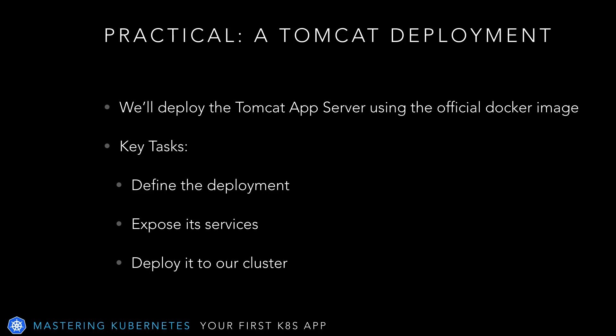In this example, we'll deploy the Tomcat app server using the official Docker image. Our key tasks will be like any deployment you might plan, no matter how small or large. First, we'll define the deployment: what containers we use, what services those containers might offer, and where they come from. Then, we'll expose the services to the world — what TCP ports and HTTP services are defined in the containers and where to reach them. Finally, we'll take that configuration information and deploy it to our cluster.